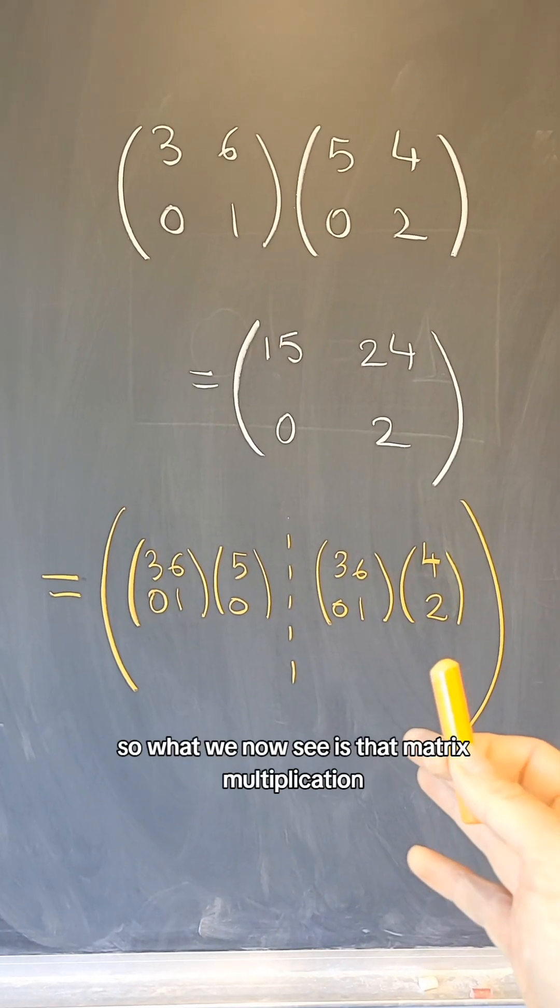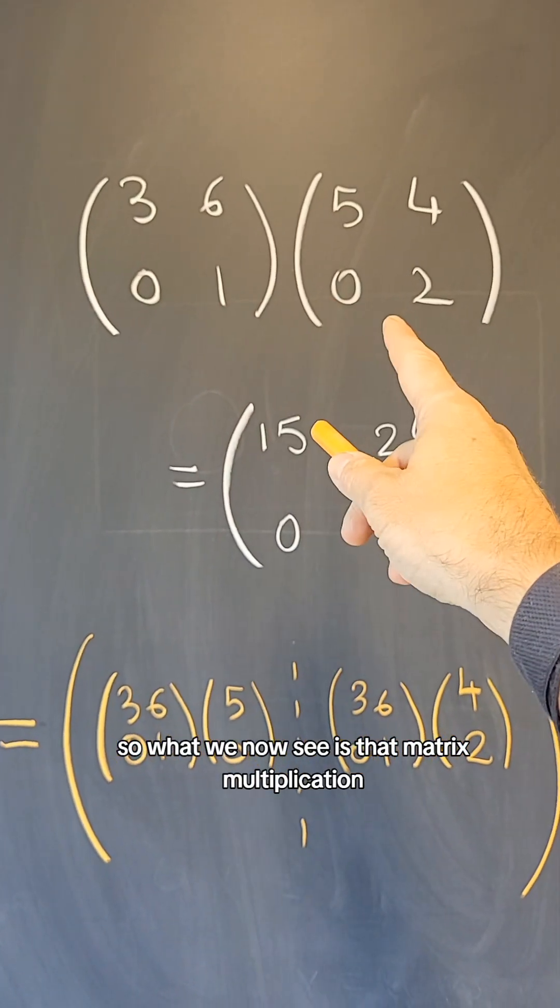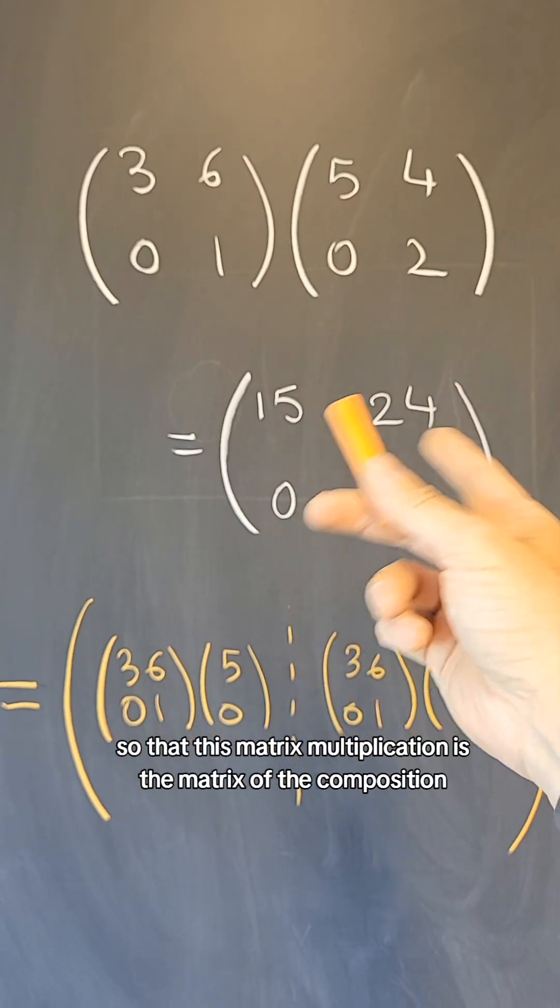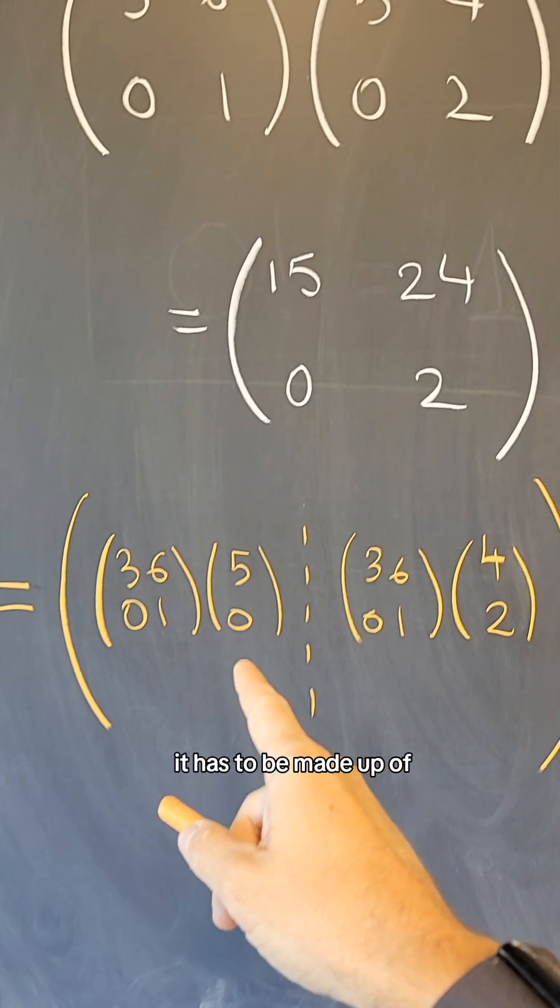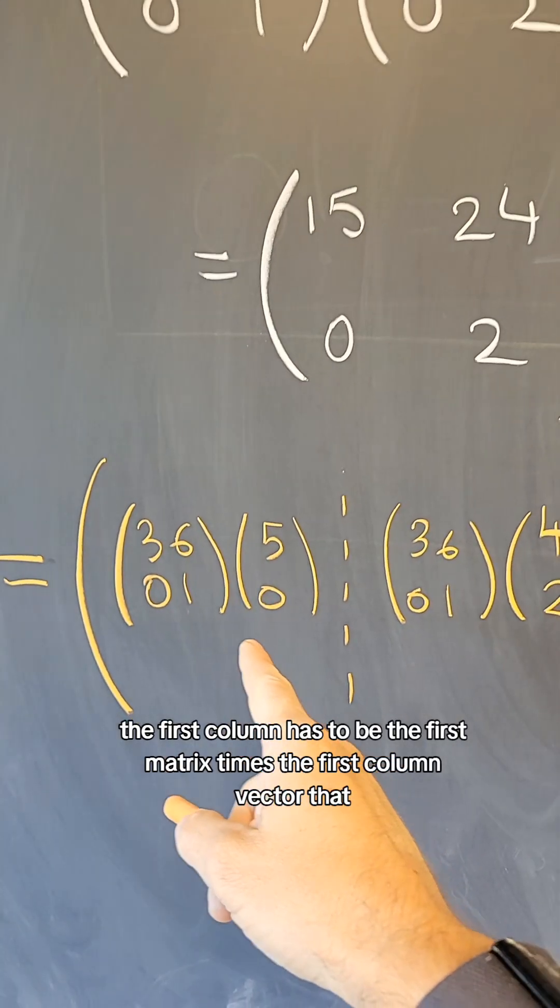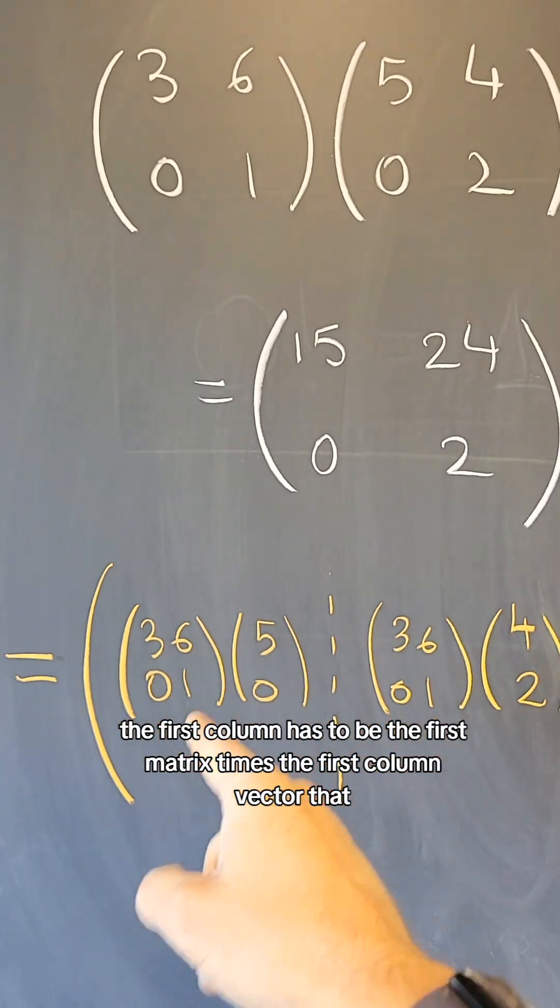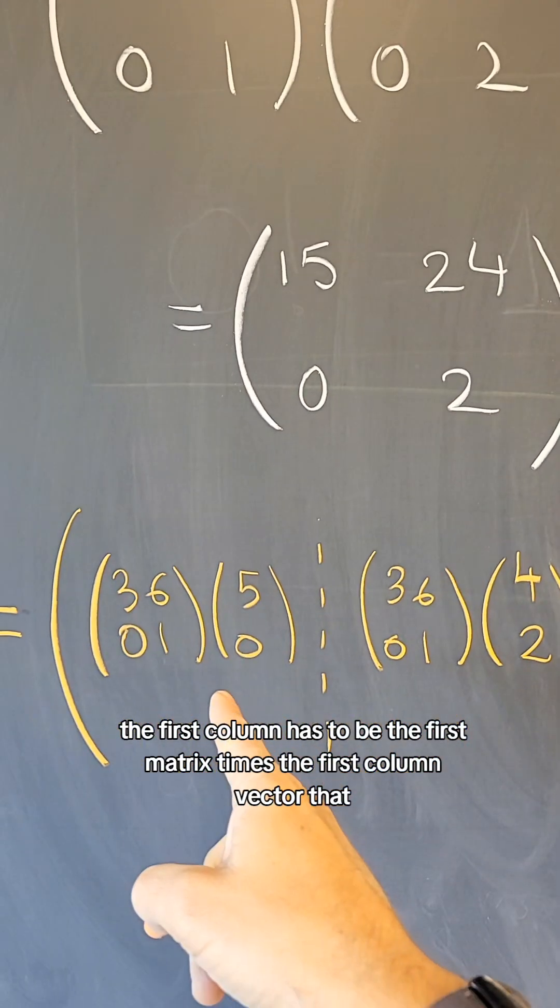So what we now see is that matrix multiplication, so that this matrix multiplication is the matrix of the composition, it has to be made up of, the first column has to be the first matrix times the first column vector, that,